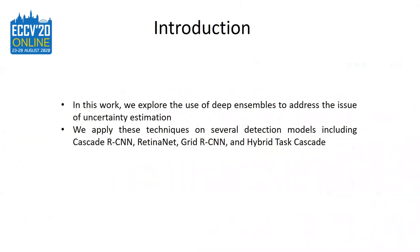In this work, we explore the use of Deep Ensembles to address the issue of uncertainty estimation in object detection. We apply this technique on several detection models, including Cascade RCNN, RetinaNet, Grid RCNN, and Hybrid Task Cascade as our base detectors.